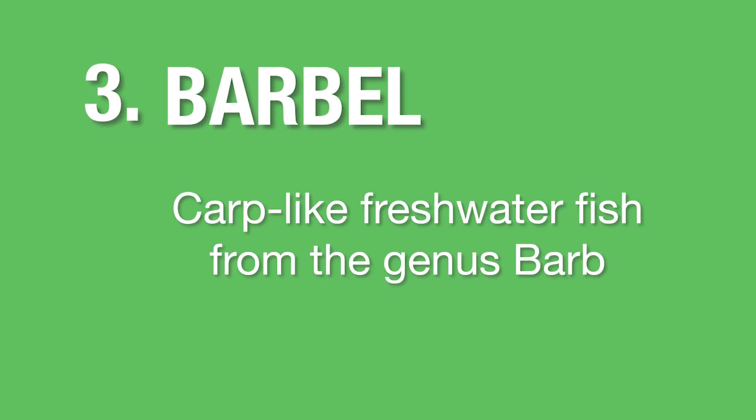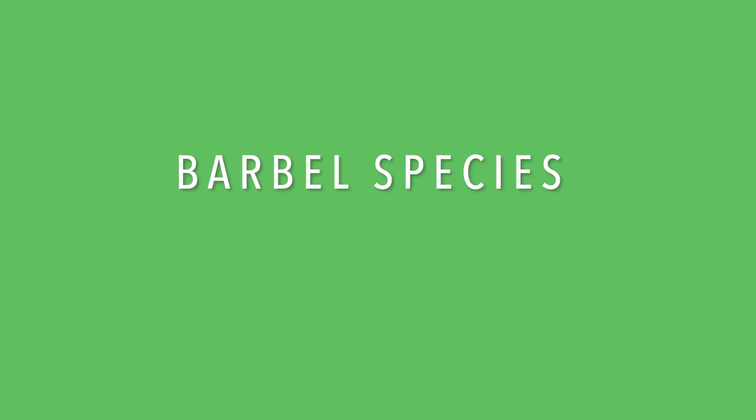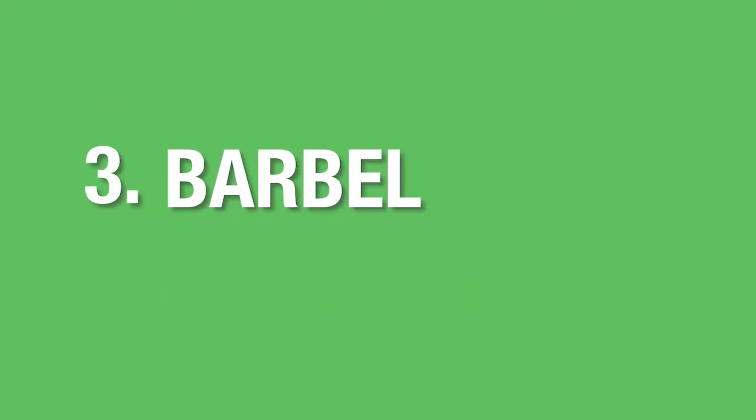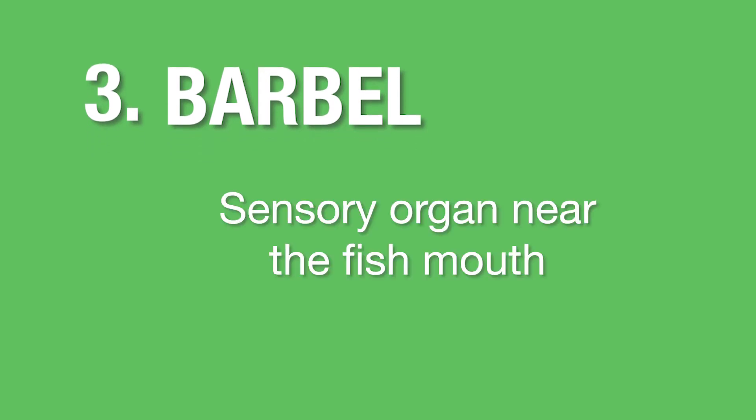Barbel can have two different meanings. The first barbel refers to a group of carp-like freshwater fish from the genus Barb. This group of fish can be found worldwide, from the European Barbus barbus and Aral Barbus to Kistan Barbus and many more.